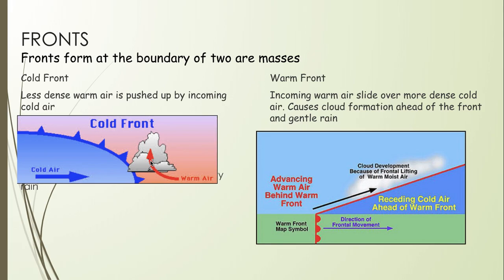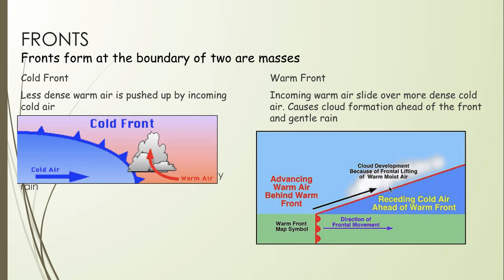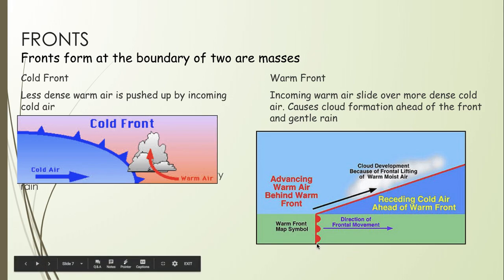At a cold front, you may have heavy rain or thunderstorms. At a warm front, incoming warm air — which is less dense — slides over the dense cold air. Cloud formation occurs not at the front, but ahead of the front, and this may bring gentle rain rather than storms. Warm fronts look like little red semi-circles on a weather map — you can think of them like little red sunrises.